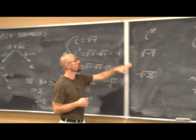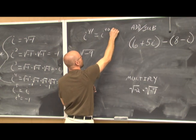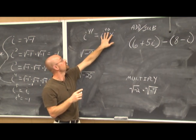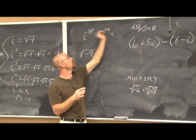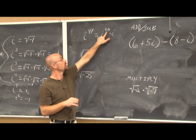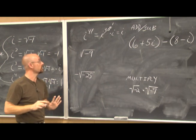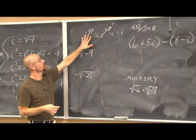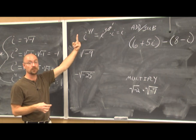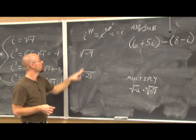For example, i to the 41st: rewrite it as i to the 40th times i using the product rule of exponents — 40 plus 1 is 41, so we haven't changed its value. Since 40 is divisible by 4, i to the 40th equals 1, and 1 times i is just i. If the even part were divisible by 2 but not 4, it would be negative 1, potentially giving negative i.